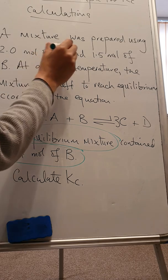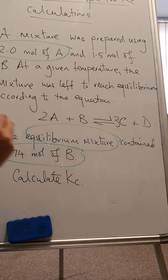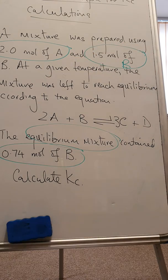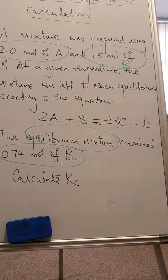The equilibrium mixture contained 0.74 moles of B. We are starting with 2 moles of A and 1.5 moles of B. I'm going to pause there just for you to get the question and then move on.